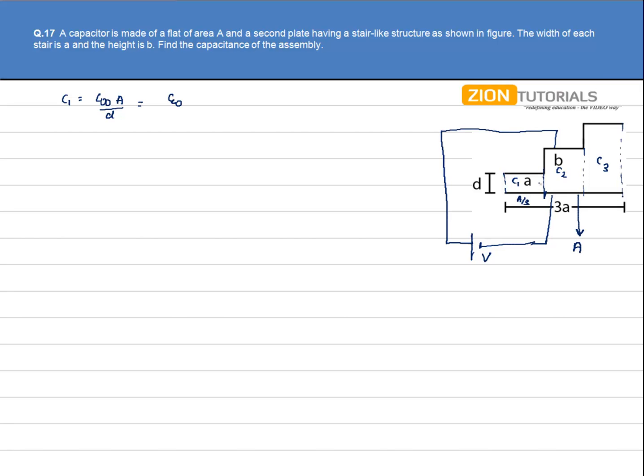Because if the total area of this bigger plate is A, we have divided it into three equal parts, each of area A/3. And since the area of both plates are the same, we have area as A/3 and the separation between the plates is D.